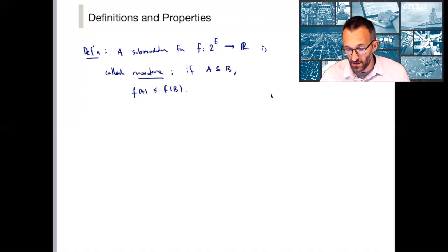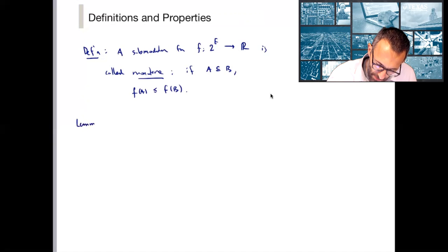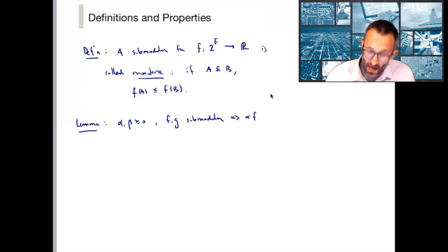It turns out that submodularity is preserved under several operations. I'll write these as lemmas. So first, if alpha and beta are any non-negative scalars and f and g are submodular, then alpha f plus beta g is also submodular.